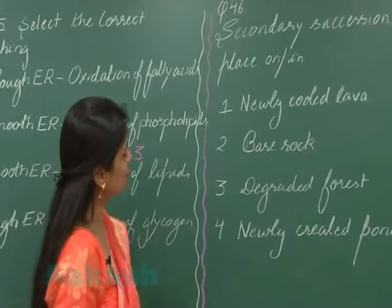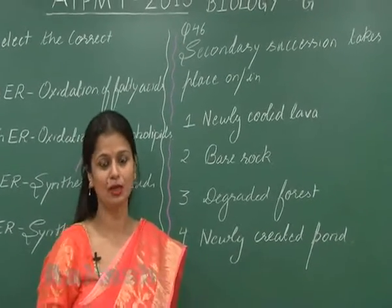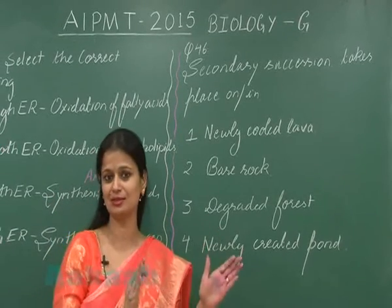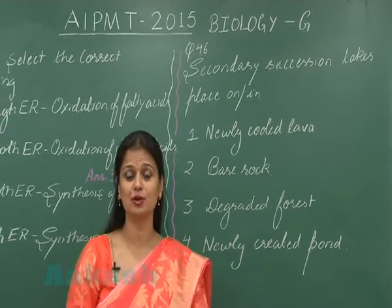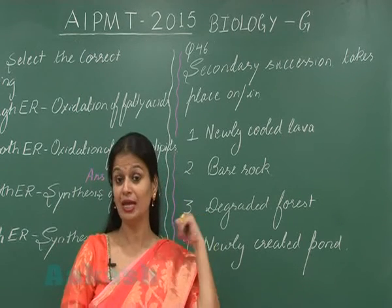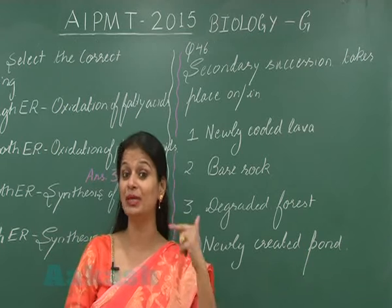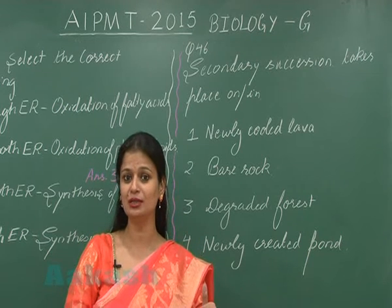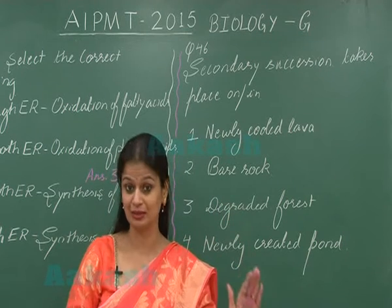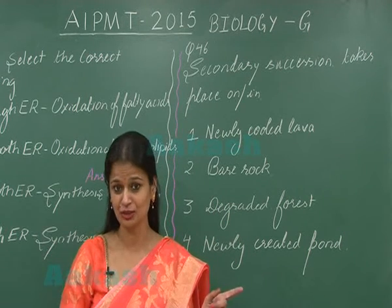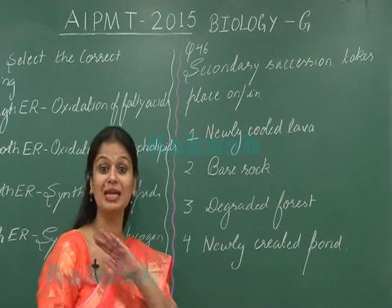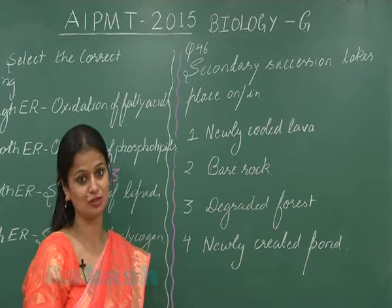Question 46 — secondary succession. There are two types of succession: primary and secondary. Primary succession occurs on a bare area, and secondary succession occurs on an area which became bare due to the destruction of a community that was present previously. In primary succession, it occurs where no community ever existed.